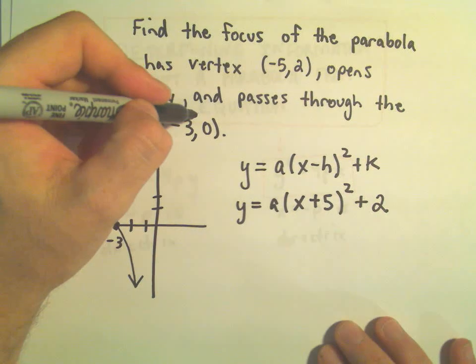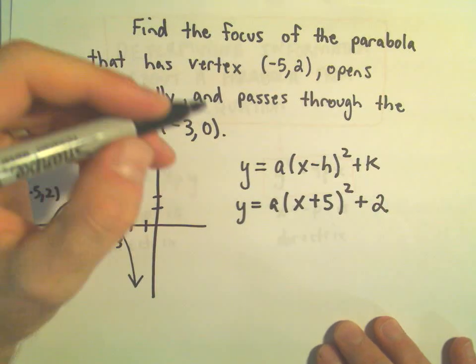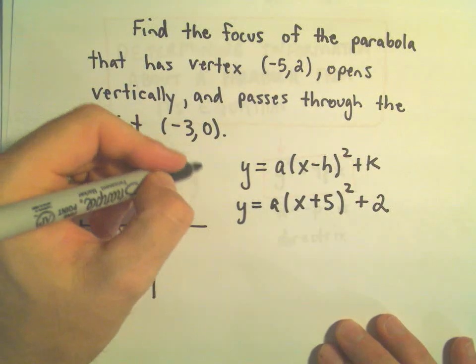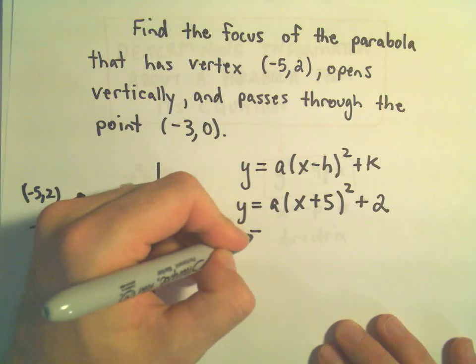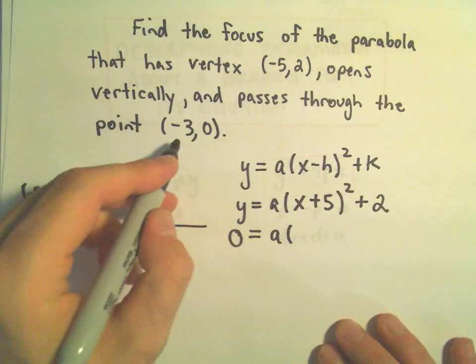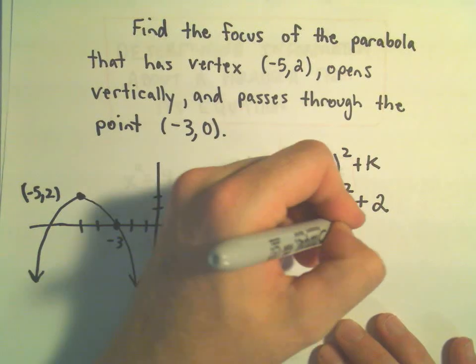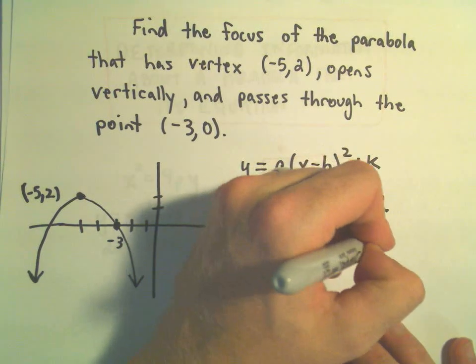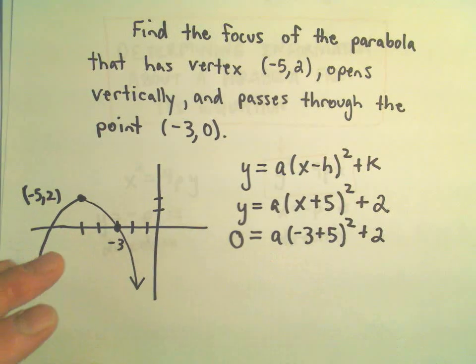I can use this information that it passes through the point (-3, 0). So if we plug 0 in for y and negative 3 in for x, this will give us an equation that will allow us to solve for our a value.